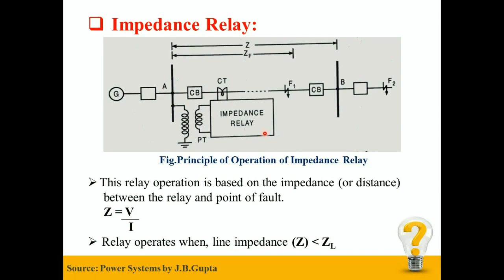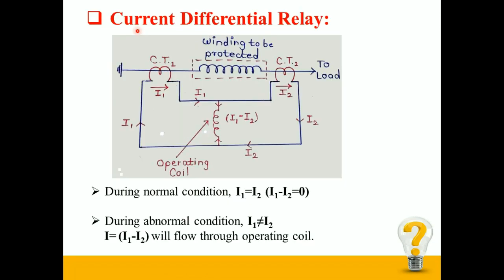Therefore impedance relay operates which sends a trip signal to circuit breaker to protect the line. Current Differential Relay. First of all let me make it clear that differential relay can only detect the fault within the protection zone, that is between CT1 and CT2.